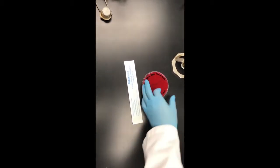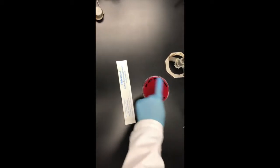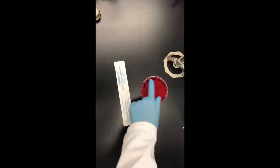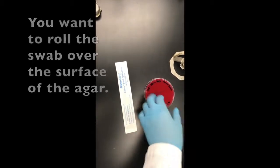And what you're going to do is you're going to run the swab on about a third of the plate and then you're going to use a loop to spread the rest of it out.